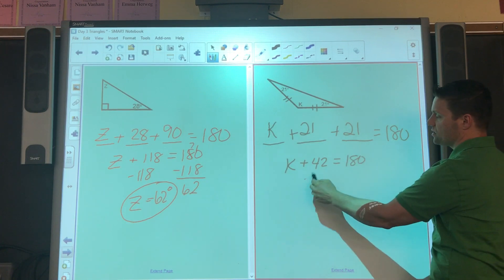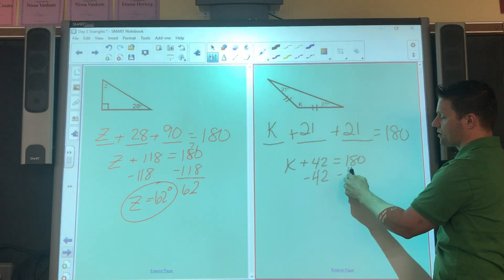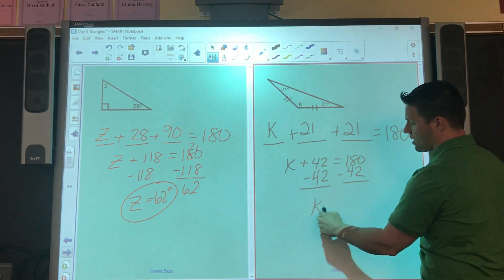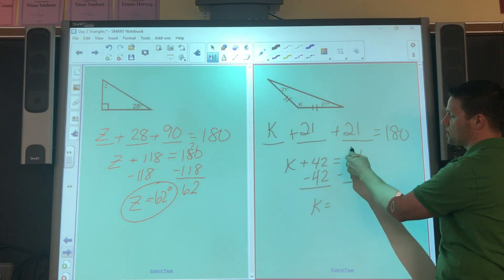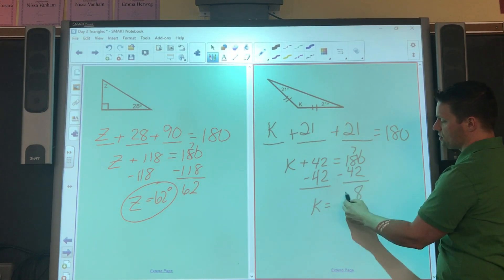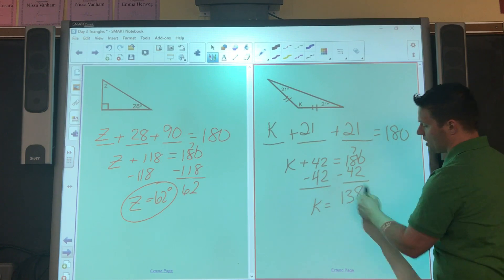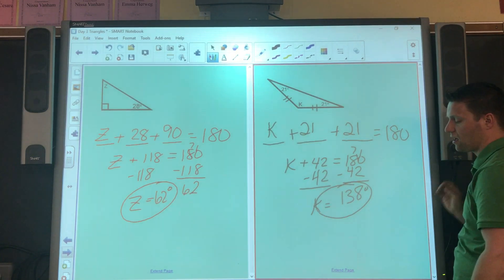21 plus 21 is 42. 42 is going to get subtracted from 180. K equals, that turns to a 7 again, 8, that's a 3, that's a 1, 138 degrees.